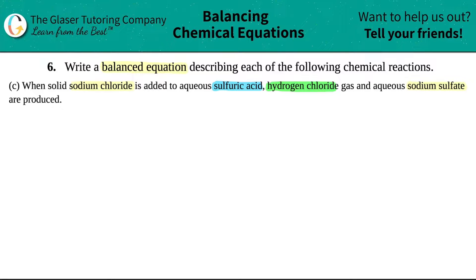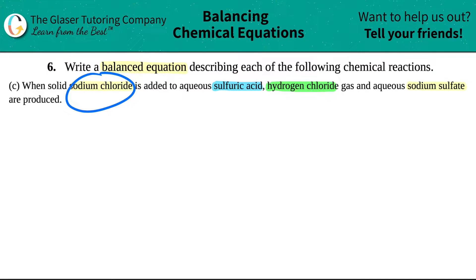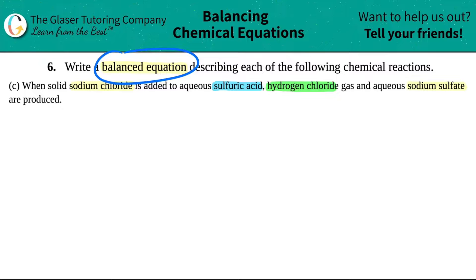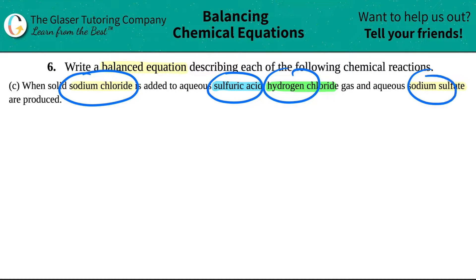As you can see here, when I'm doing chemistry problems — and you'll see this throughout all the videos that I do — I love to highlight specific things that are important. There's more stuff in this sentence that I didn't highlight that is important, but you should always just try to group together important stuff right from the get-go. In this case, we have to write a balanced equation, so that's why I highlighted all of the compounds.